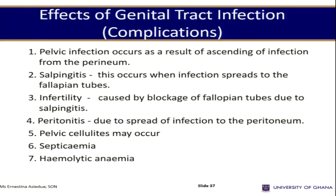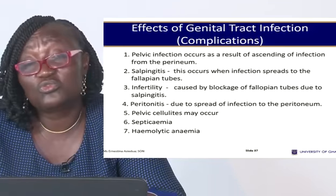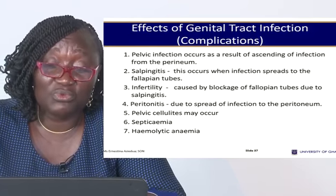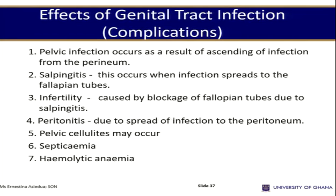Effects of genital tract infections include pelvic infection, perineal infection, and salpingitis — inflammation of the fallopian tubes as the infection ascends through the uterus. Uncontrolled sepsis can cause infertility through blocked or scarred fallopian tubes. Peritonitis can occur as infection spreads to the peritoneum. Pelvic cellulitis may also occur. When severe, infection can enter the bloodstream causing septicemia and hemolytic anemia.